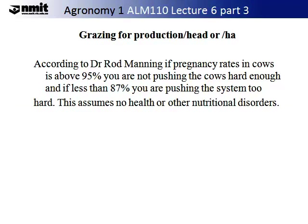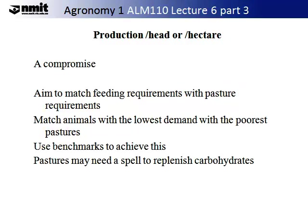According to Dr Rod Manning, a researcher in this area, if pregnancy rates in cows are above 95% you are not pushing the cows hard enough, and if less than 87% you are pushing the system too hard. This assumes no health or other nutritional disorders within your stock. As with so many things, this is a compromise. Aim to match feeding requirements with pasture requirements. Match your animals with the lowest demand with the poorest pastures. Use benchmarks to achieve this. Pastures may need to spell or replenish carbohydrates, so allow this in your rotations.